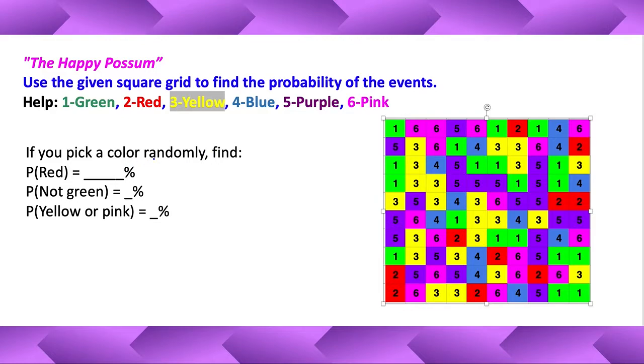If you pick a color randomly, find the probability of red. Alright, so red, how many reds are there? Well, let me count: one, two, three, four, five, six, seven, eight, nine, ten. Double check, yeah, there's only ten reds.